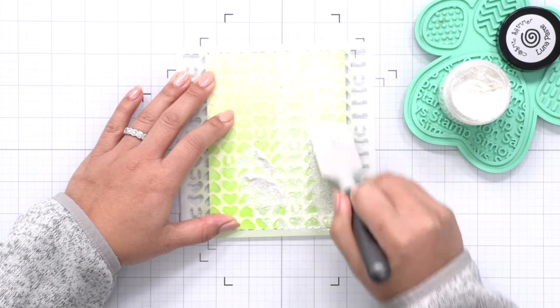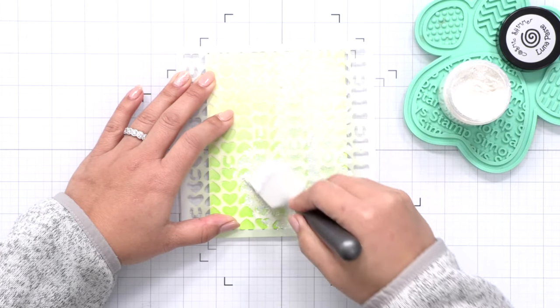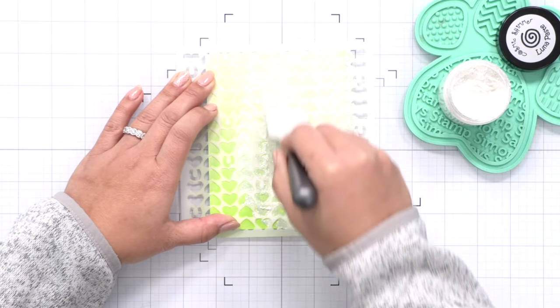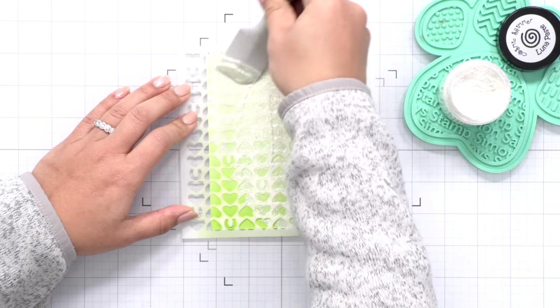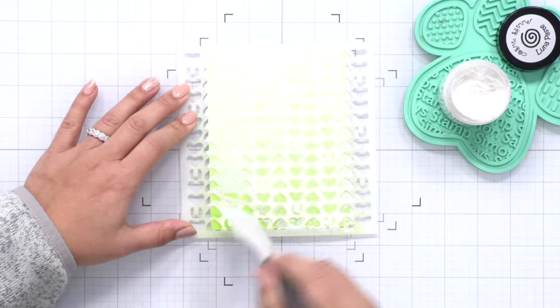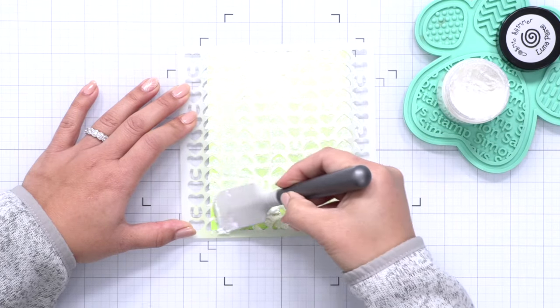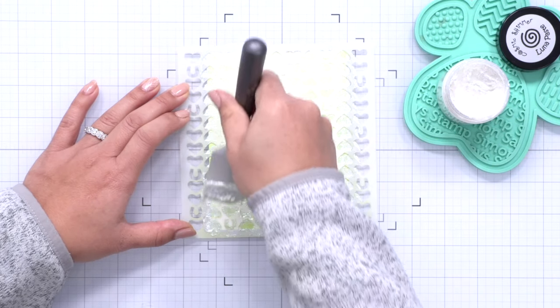So I am spreading a thin layer here over my stencil going back and forth here with my media spatula. I've got my Luna Paste on my Positively Everything tool so my jar doesn't move around while I'm grabbing more paste to add onto my project.